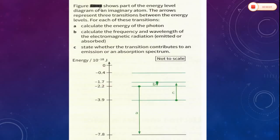Now question number 1. The figure shows part of the energy level diagram of an imaginary atom. The arrows represent three transitions between the energy levels, these three arrows A, B, and C. For each of these transitions,